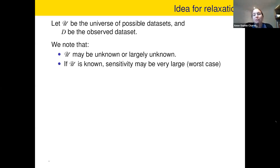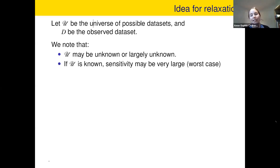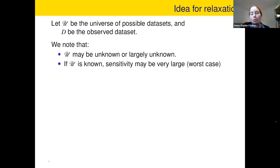This universe U may be unknown or actually unknown — perhaps you don't know really what possible values you might see. Also, if U is known, the sensitivity — referring to the sensitivity of the Laplace mechanism, for example — could be very large because differential privacy is a worst-case scenario. You have to worry about privacy for people in data sets which may be very unlikely to appear in reality. For example, a data set where only one person is actually working and everyone else is unemployed is part of the universe of possible data sets. So it's a worst case and you might have a large sensitivity.